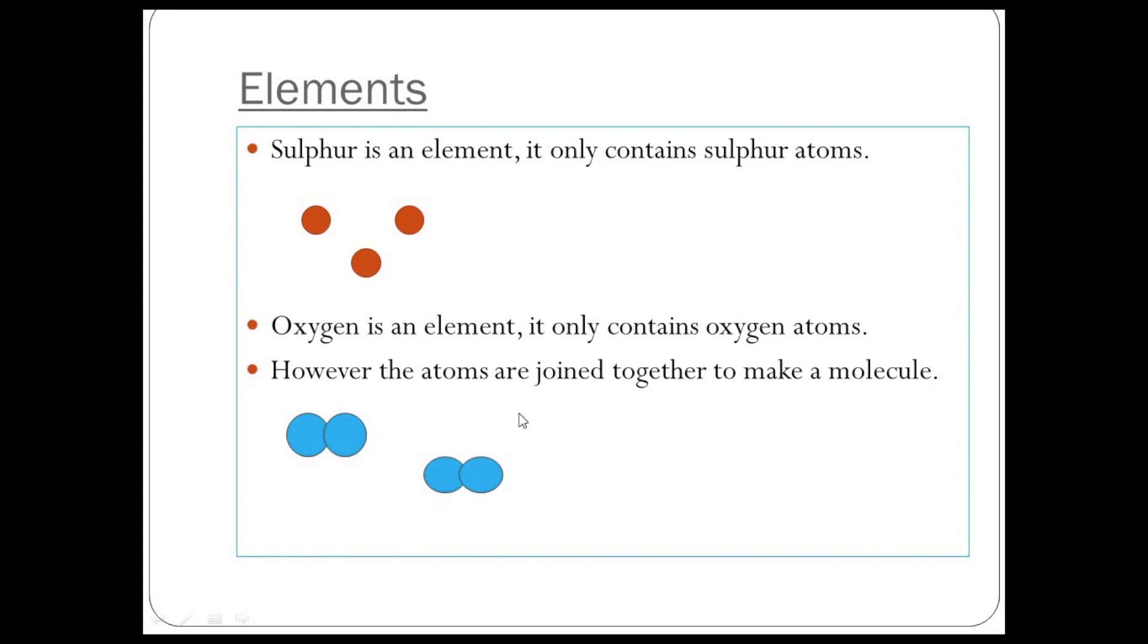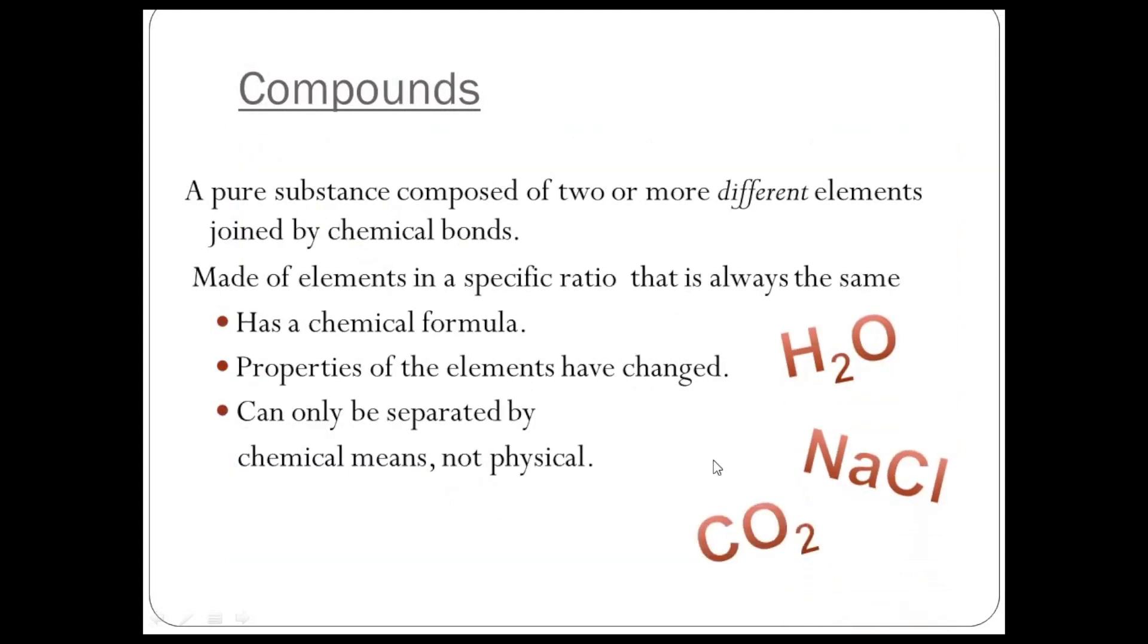Compounds. Compounds: two or more different elements joined by chemical bonds. So in other words, these atoms here in the water and the NaCl, which is sodium chloride, and the carbon dioxide, they're all joined together by bonds like arms holding on to each other. It's a molecule because there's more than one atom joined together.